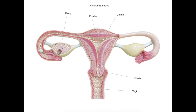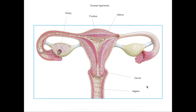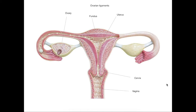Now what's important is to actually look at the ligaments themselves. There are three main ligaments we need to talk about: the broad ligament, the ovarian ligament, and the suspensory ligament of the ovary.